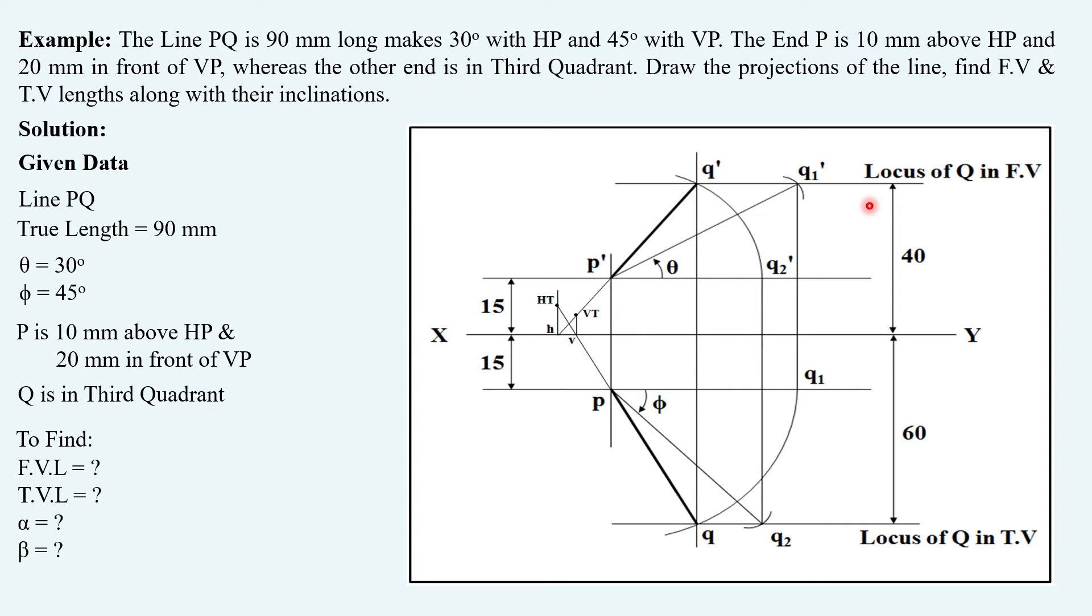According to third quadrant the front view Q' should be below XY and the top view Q should be above XY. It's very clear that positions of these two lengths will be flipped. So theta will be taken down instead of taking up and phi will be taken up instead of taking down.